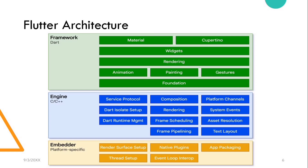Before going further into what Dart is, let us first understand the Flutter architecture. Flutter is designed as an extensible, layered system. It exists as a series of independent libraries that each depend on the underlying layer. No layer has privileged access to the layer below, and every part of the framework level is designed to be optional and replaceable. Flutter applications are packaged in the same way as any other native application.